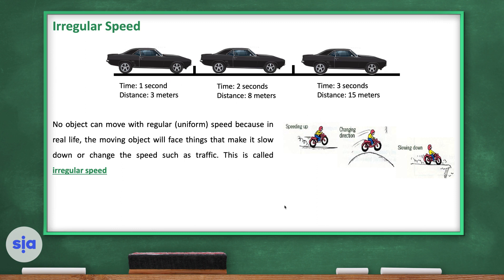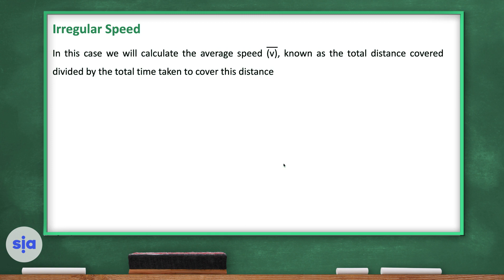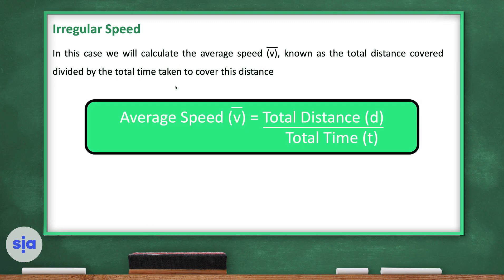Irregular speed means covering unequal distances in unequal periods of time. Speed is irregular or non-uniform when the object covers equal distances at unequal periods of time, or unequal distances in equal periods of time. In this case, we calculate the average speed — defined as the total distance covered divided by the total time taken.